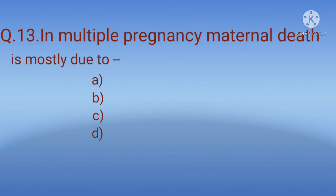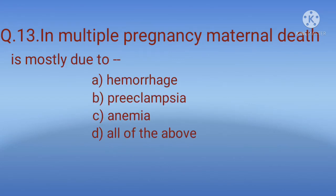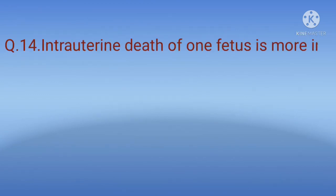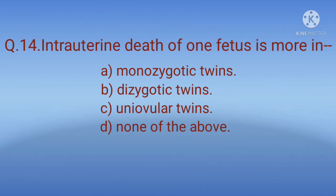Question 13: In multiple pregnancy, maternal death is mostly due to? The correct option is D, all of the above. Question 14: Intrauterine death of one fetus is more common in? Options: A) Monozygotic twins, B) Dizygotic twins, C) Uniovular twins, D) None of the above. The correct option is A, monozygotic twins.